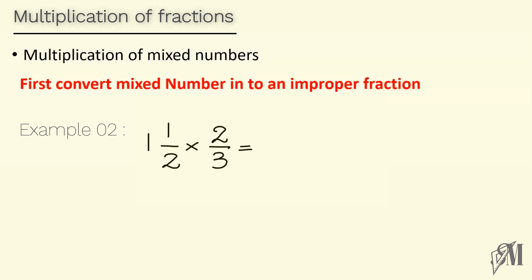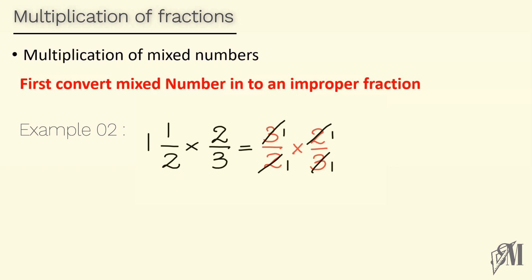Look at this example: the first part is a mixed number — convert it into an improper fraction, which becomes 3 over 2. The next part is a proper fraction, so we write it as it is. In multiplication of fractions, we can cancel numerators and denominators divisible by the same number. The 3s can be cancelled by 3, giving 1 and 1. Similarly the 2s can be divided by 2, giving 1 and 1. So 1 into 1 over 1 into 1 equals 1.